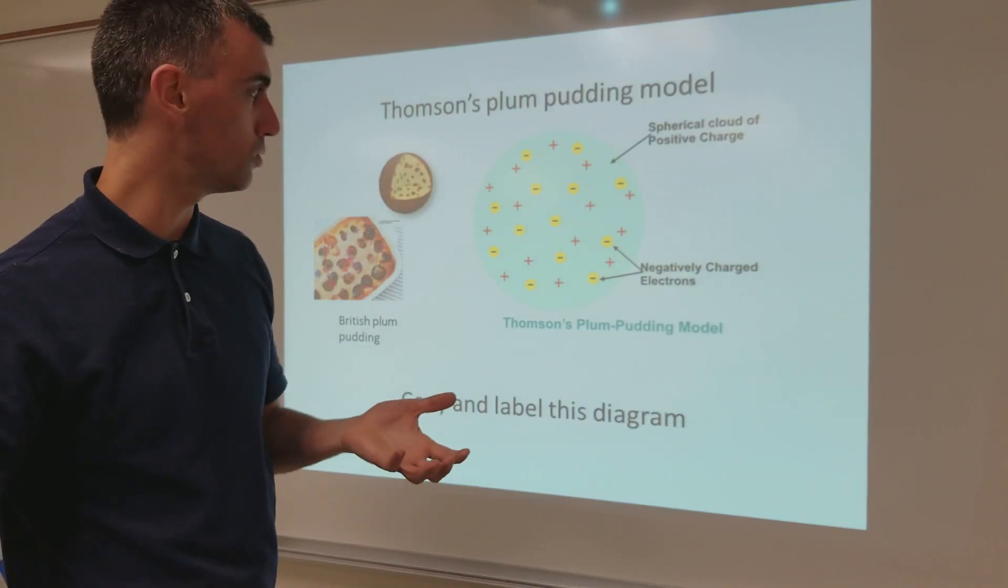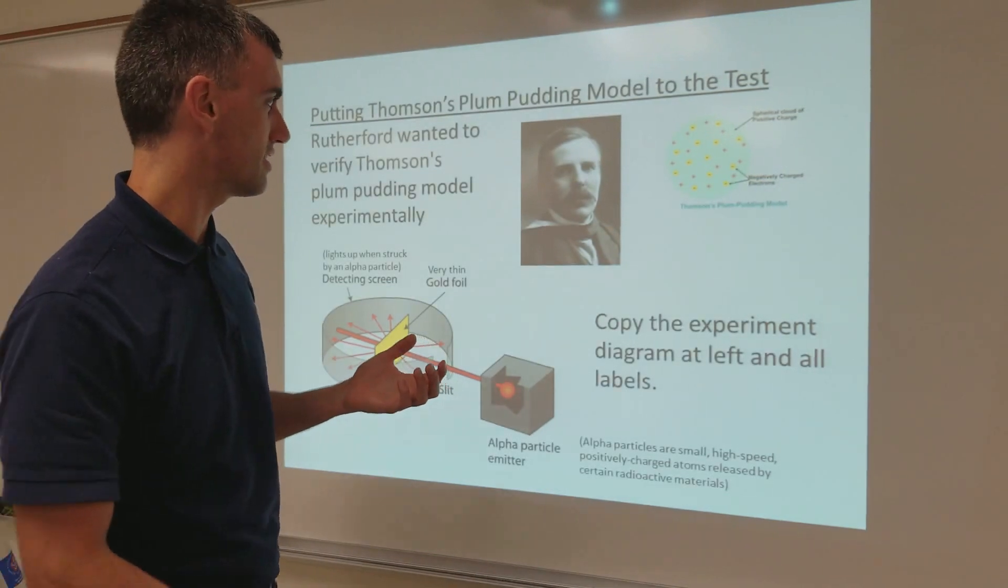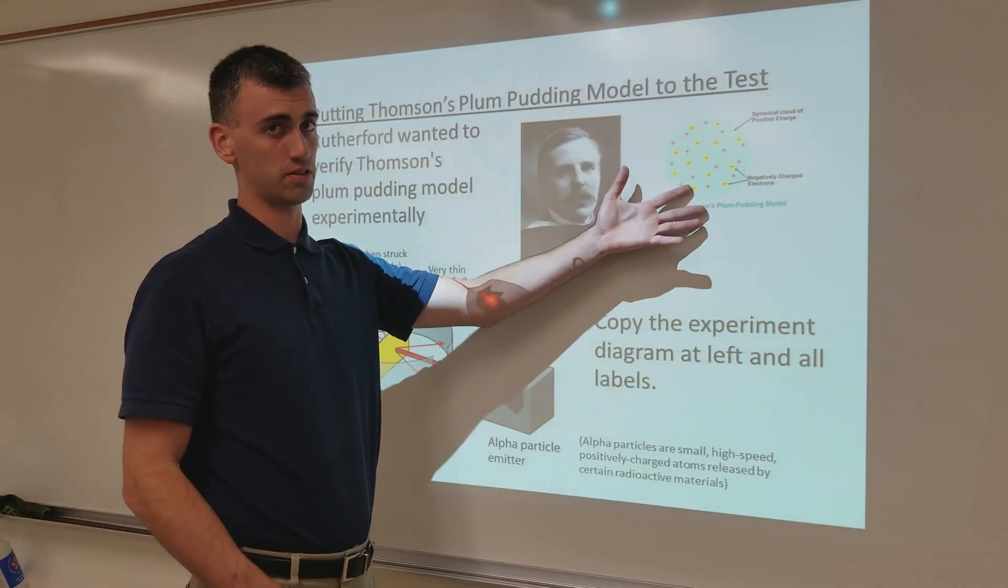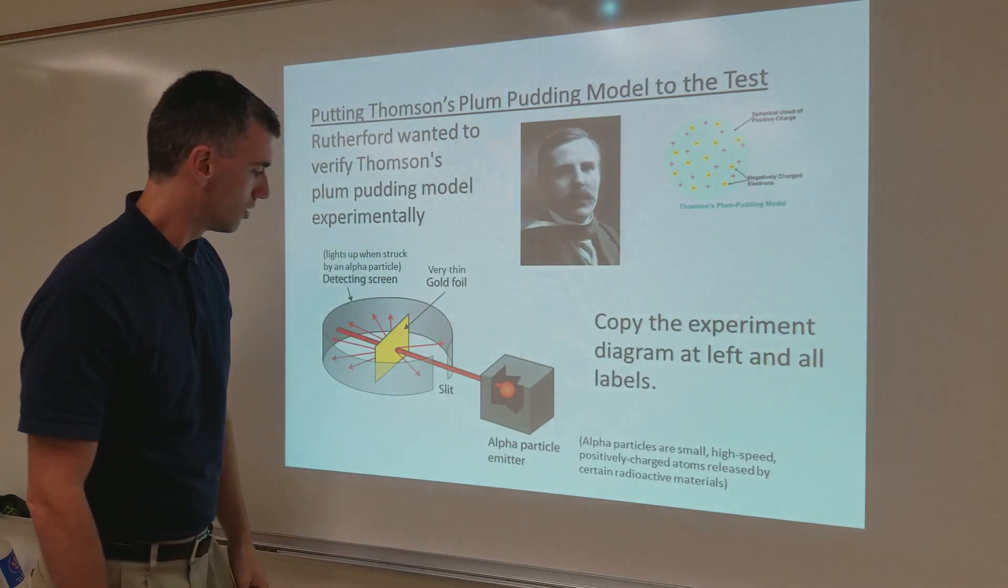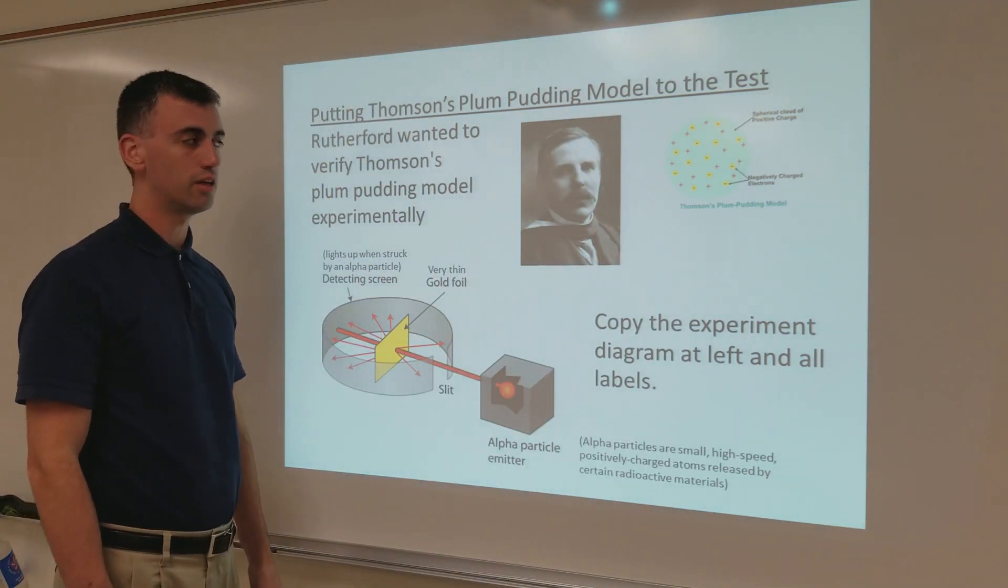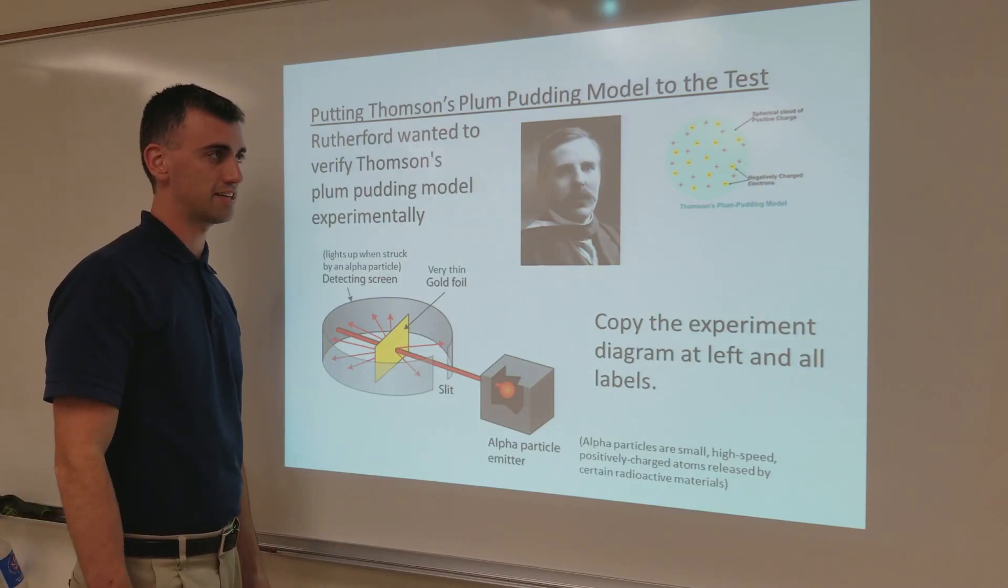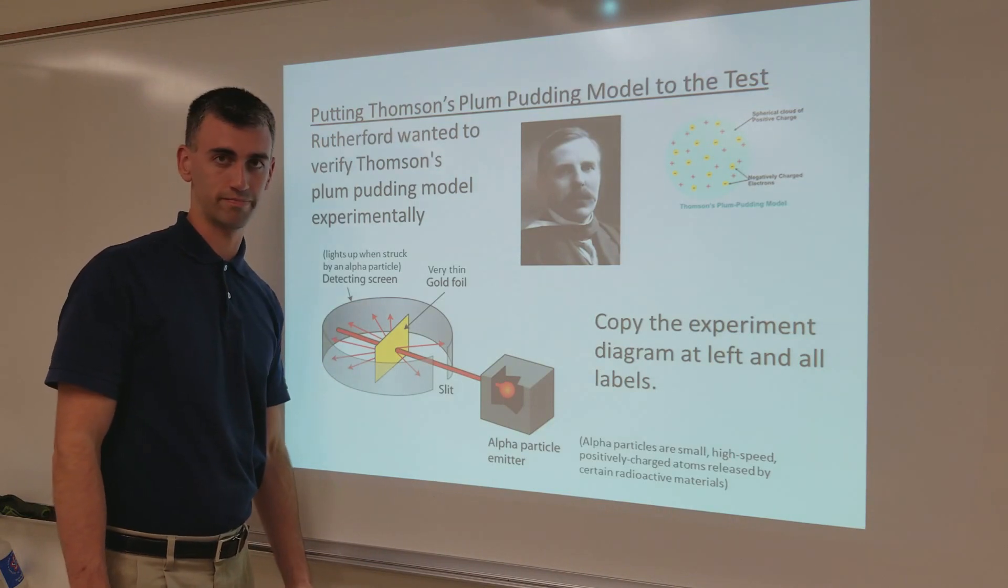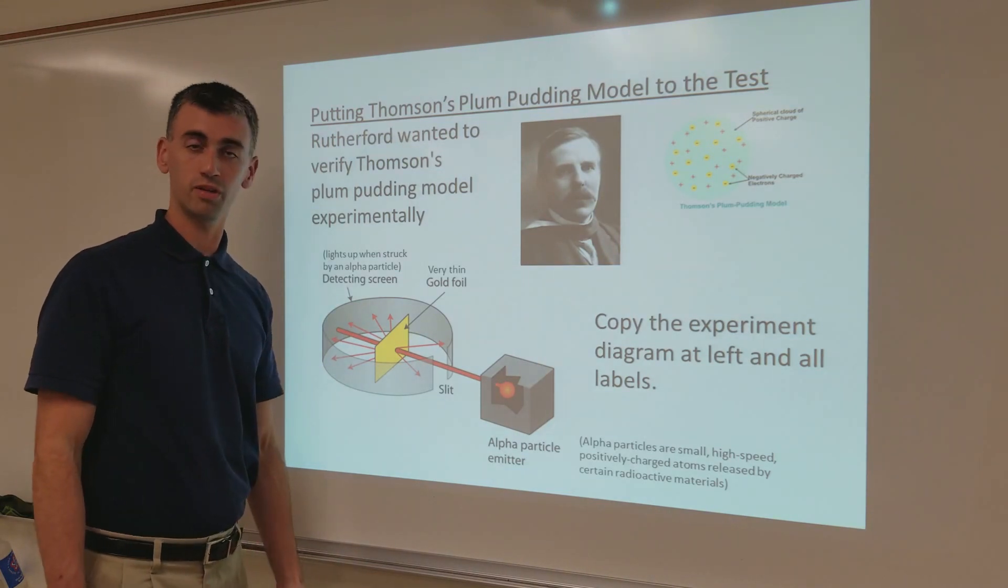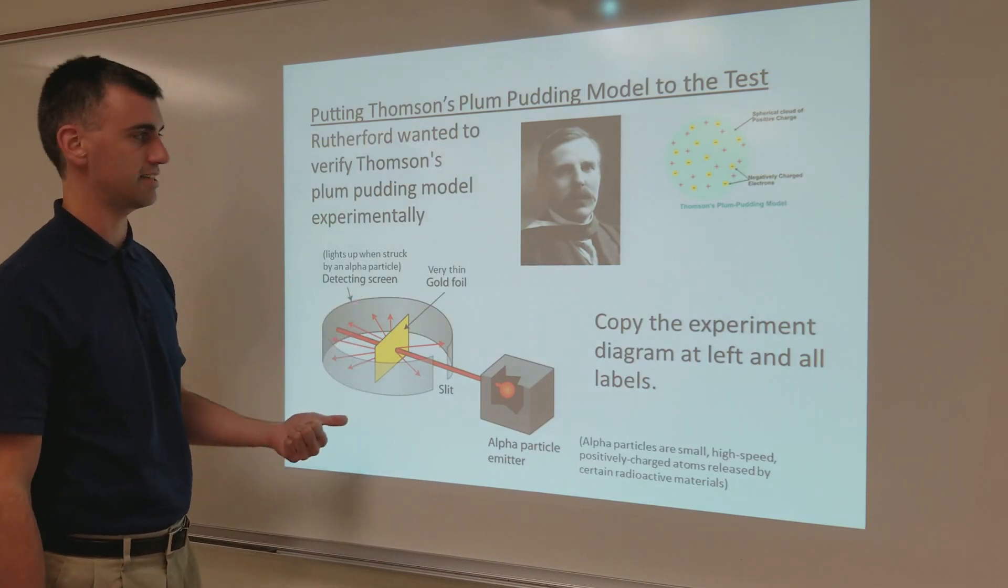So, how do you do something like that when you have something that it's too small to see? No one's ever seen an atom because it's far smaller than any microscope in the world can see. Well, effectively it comes down to what so many scientists have found effective for this. You find a way to smash it with something. When you smash one particle into another, the way they behave can tell you a lot about their properties and how they're put together.